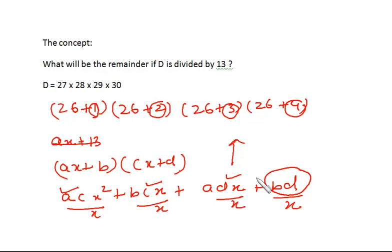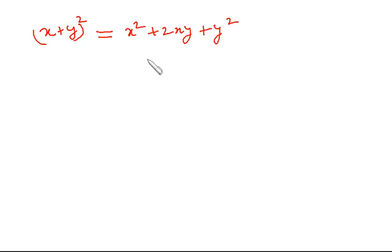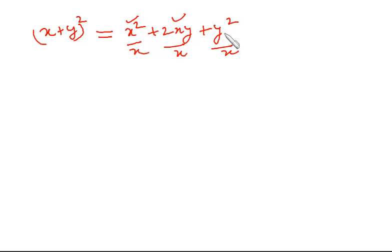There is a fantastic algebra behind this concept. Once you grasp it, you won't need to write out the full expression every time. Let me take one more example: (x + y)². This expands to x² + 2xy + y². If I divide this expansion by x, the x² term and the 2xy term are both multiples of x, so no remainder from those. The remainder comes from y² only.